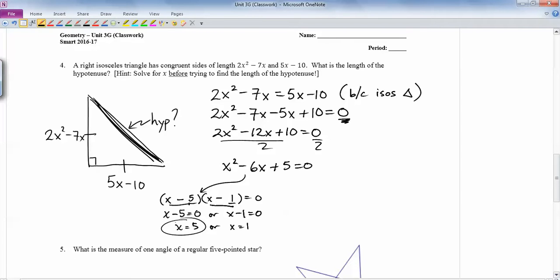And then if you take these answers and check them, plug in 5, you get 15 here. Plug in 5 up here, you'll get 15. But if you plugged in 1 down here, you get 5 minus 10, which is negative 5. So the 1 doesn't really make sense for the problem.